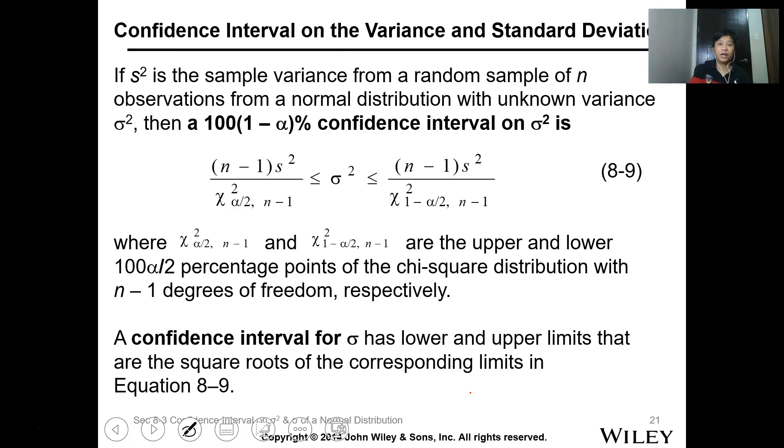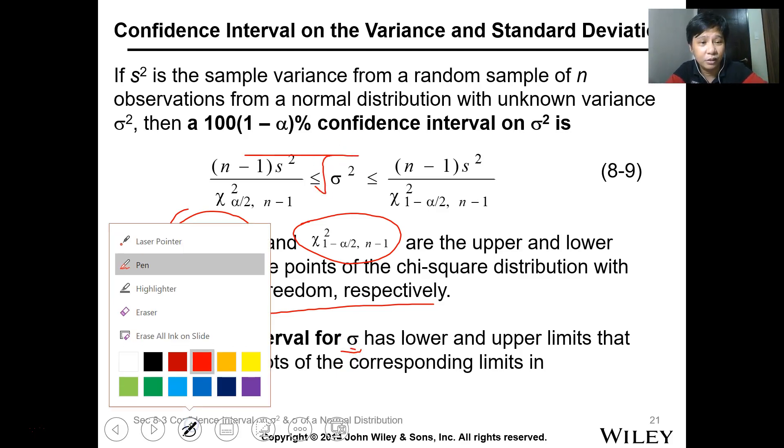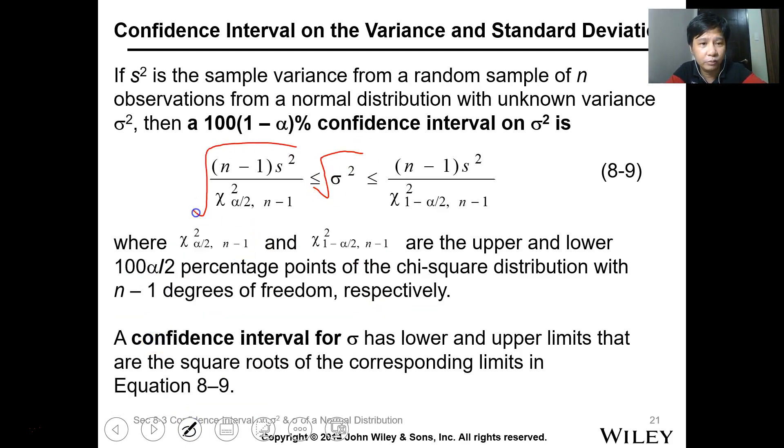Back to the PowerPoint. For the confidence interval of variance and standard deviation, you can utilize this expression or formula. This one is a double bound, so it has upper and lower bound. Take note the chi-square value. For this one, chi-square is 1 minus alpha over 2. So meaning you need to get 1 minus alpha over 2, while this one is just alpha over 2. You just get the upper and lower bound, where 100 times alpha over 2 percentage point of the chi-square distribution is n minus 1 degrees of freedom. When getting the confidence interval for standard deviation, just take the square root. Square root of both sides. That will be the interval for the confidence interval for your standard deviation.